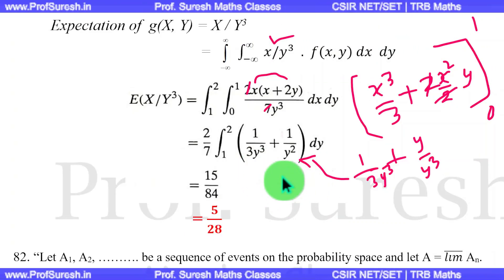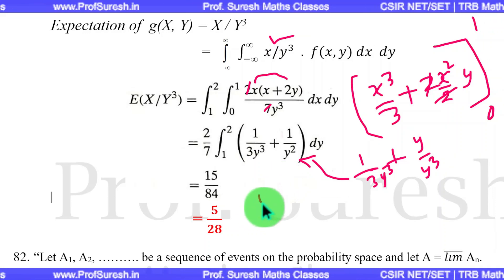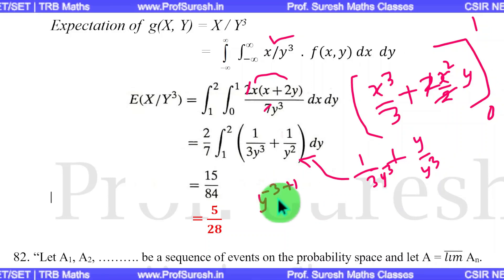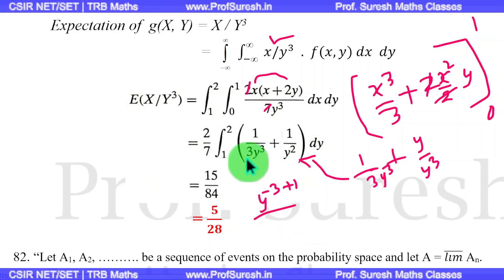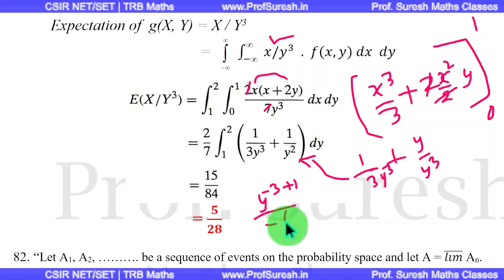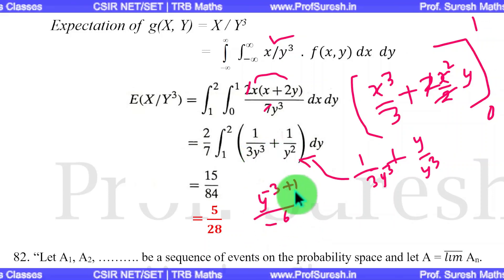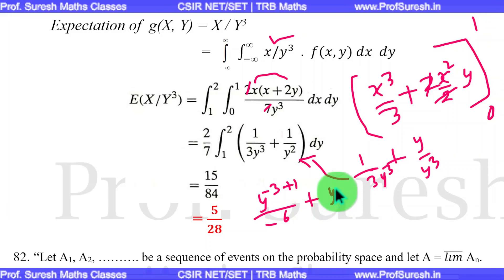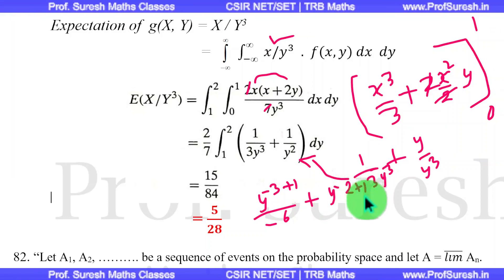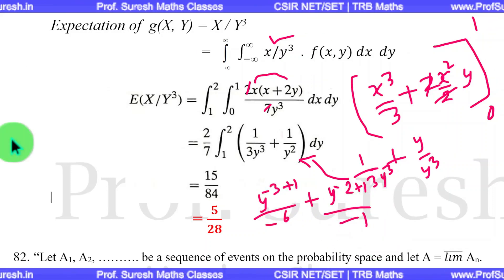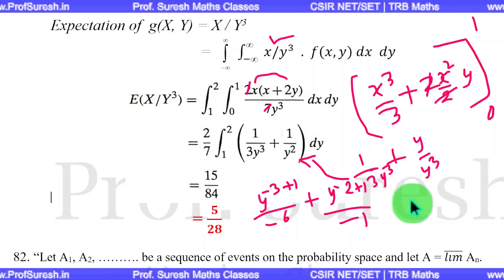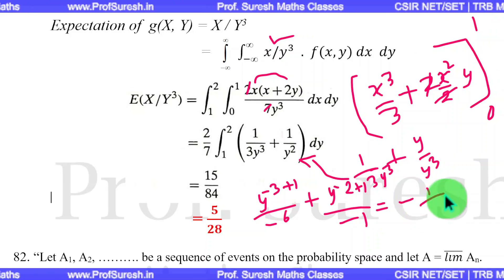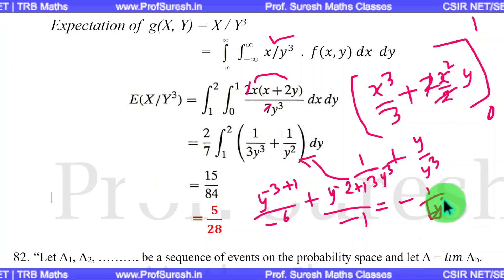The term 1/y³ is y to the power minus 3. Applying the power rule: y^(−3+1) / (−3+1) = y^(−2) / (−2). Similarly, 1/y² is y^(−2), giving y^(−2+1) / (−2+1) = y^(−1) / (−1) = −1/y. So y^(−2) integrates to −1/(2y²) and y^(−2) contributes −1/y.